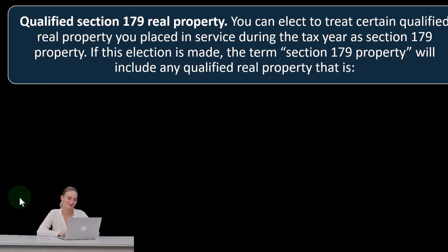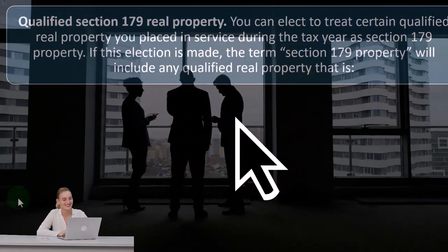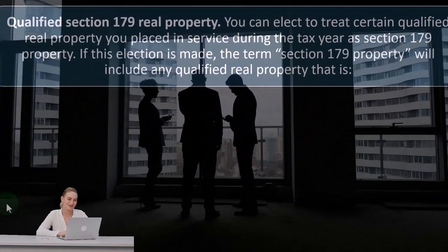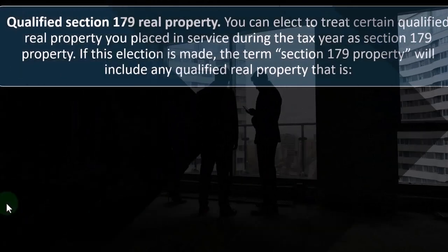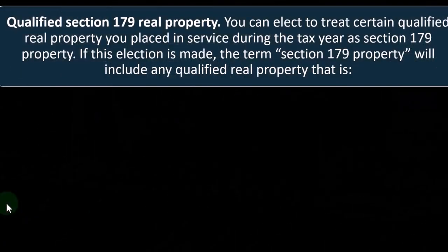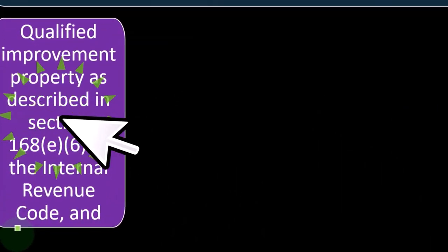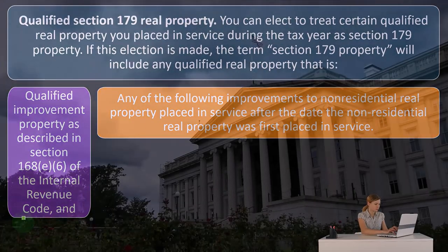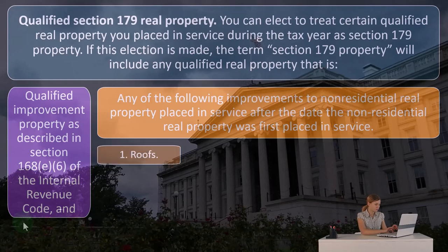Qualified Section 179 real property: you can elect to treat certain qualified real property placed in service during the tax year as Section 179 property. If this election is made, the term 'Section 179 property' will include any qualified real property — generally real estate — that is qualified improvement property as described in Section 168(e)(6) of the Internal Revenue Code, and any of the following improvements to non-residential real property placed in service after the date the non-residential real property was first placed in service.